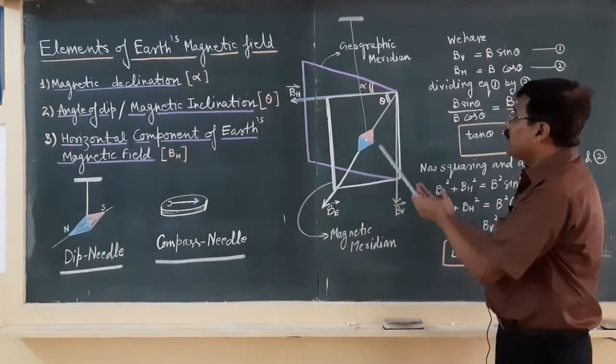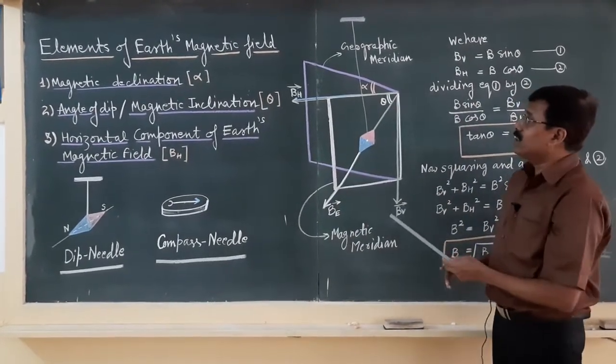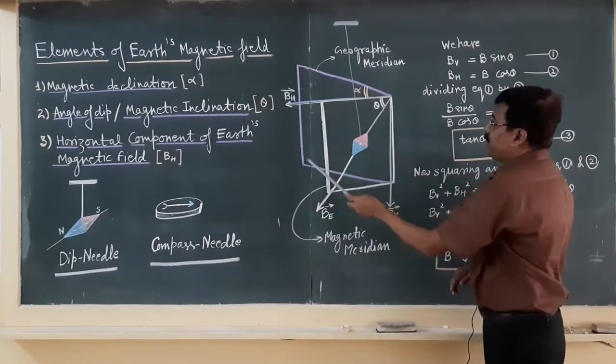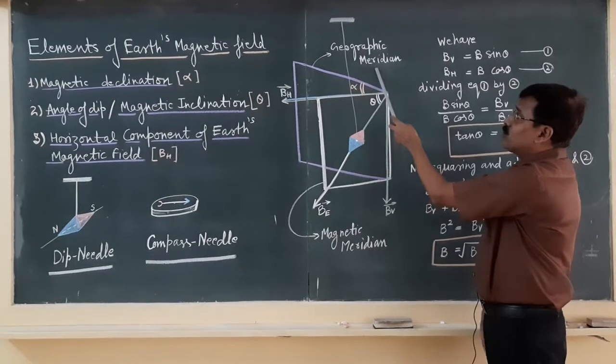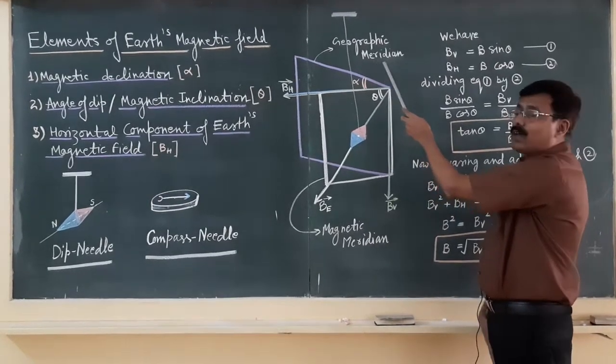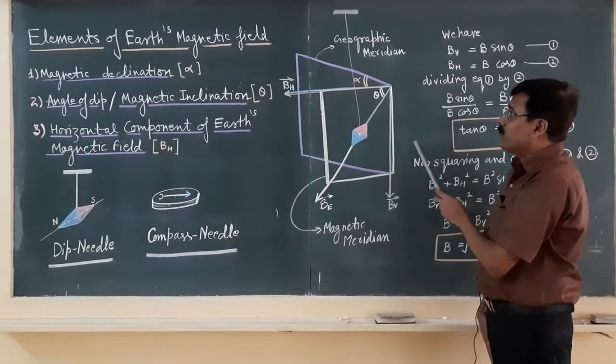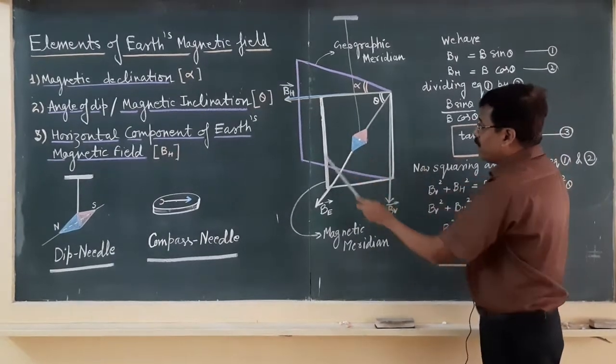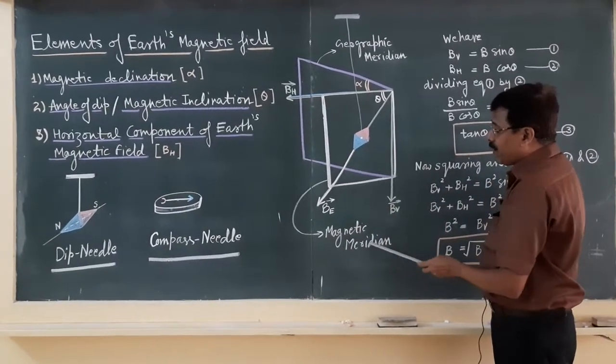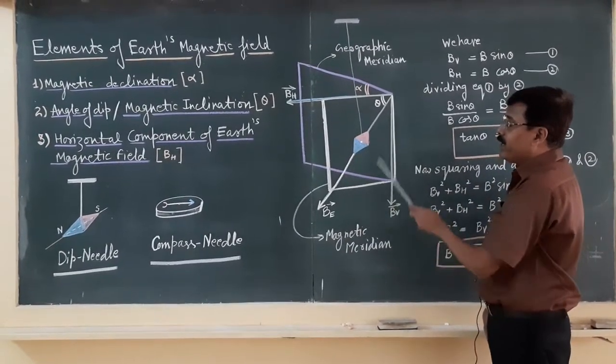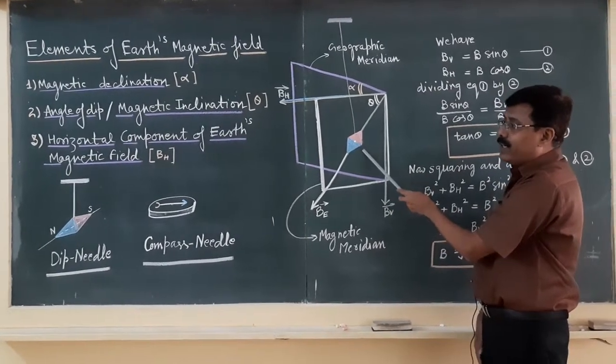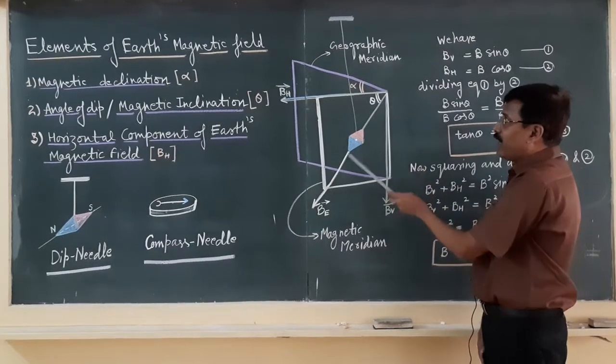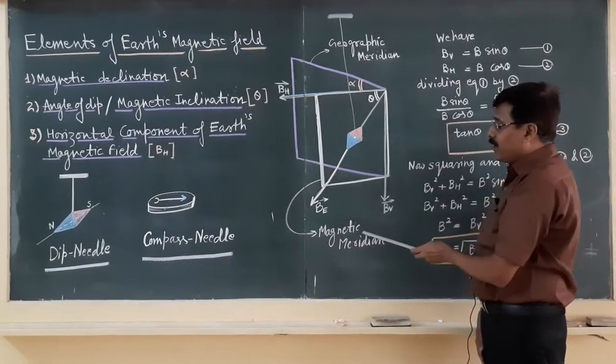Now come to the concept of the elements. This is the geographic meridian. Geographic meridian is basically the vertical plane which passes through the geographic axis of the earth. And this white color rectangle is the magnetic meridian. Magnetic meridian is a vertical plane in which the suspended dip needle lies. This is the plane in which the suspended needle lies.